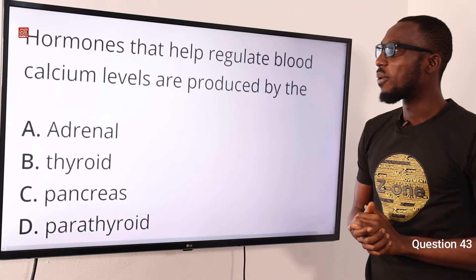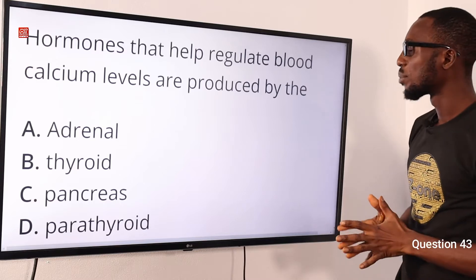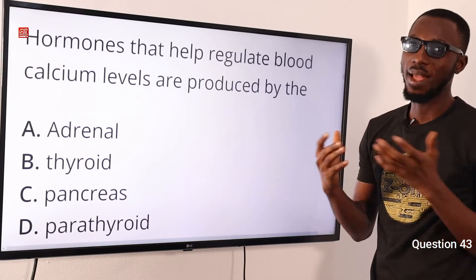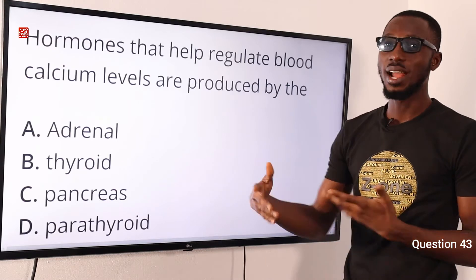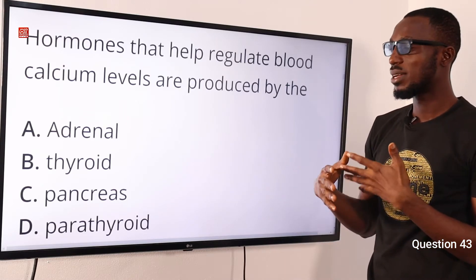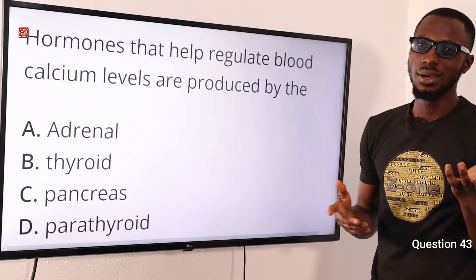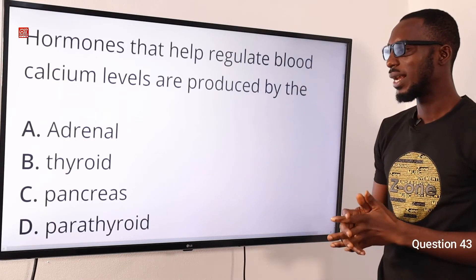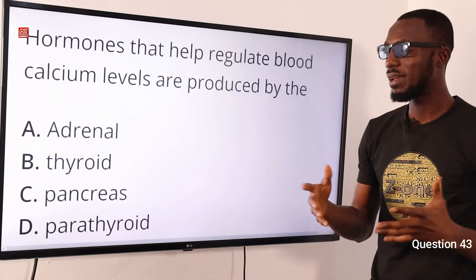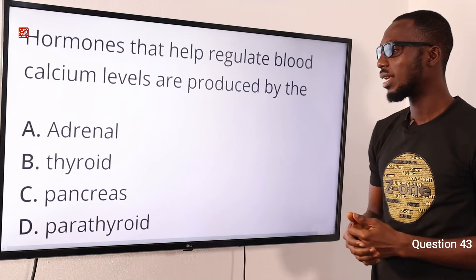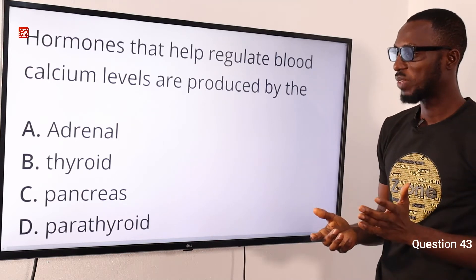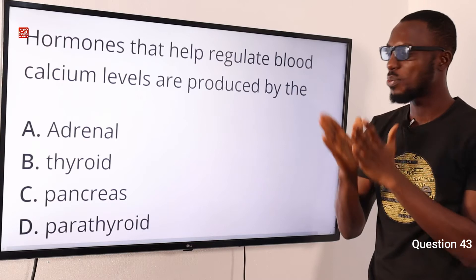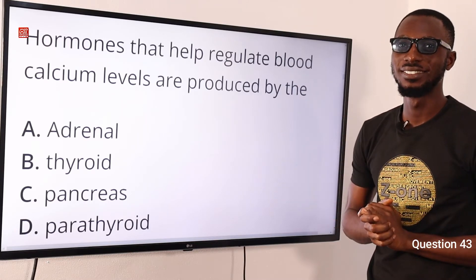Question 43. Hormones that help regulate blood calcium levels are produced by which of these glands? The adrenal gland produces adrenaline and non-adrenaline — emergency hormones. The thyroid gland produces thyroxine and other hormones, basically regulating metabolic rates, respiration, physical and mental development, and growth generally. The pancreas regulates blood sugar level. The parathyroid controls the amount of calcium in the blood. So the correct option is option D, parathyroid.